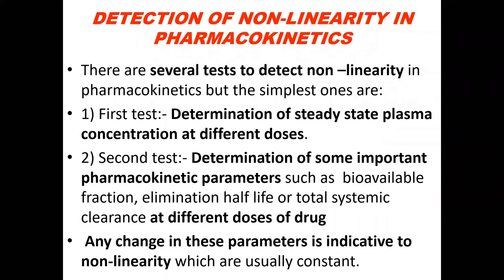There are different ways to detect if pharmacokinetics is nonlinear. First, you can determine the steady-state plasma drug concentration at different doses — in linear kinetics, all plasma concentration profiles are superimposable, but not here. Another way is to determine pharmacokinetic parameters such as bioavailable fraction, elimination half-life, or total systemic clearance at different doses. Any change in these parameters indicates non-linearity.